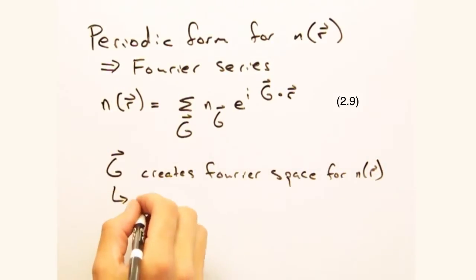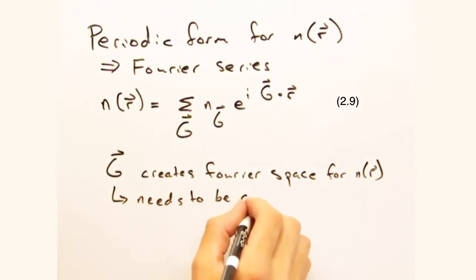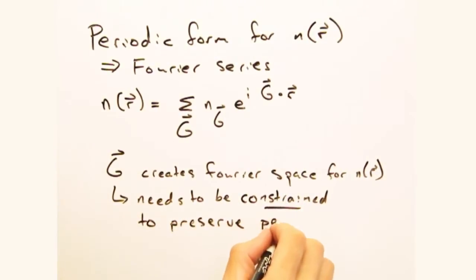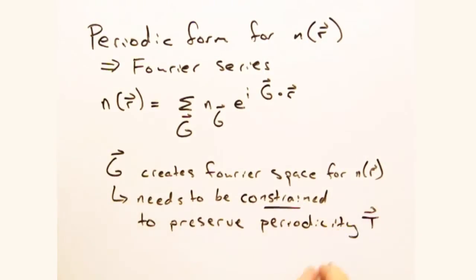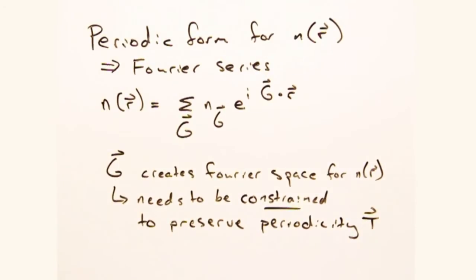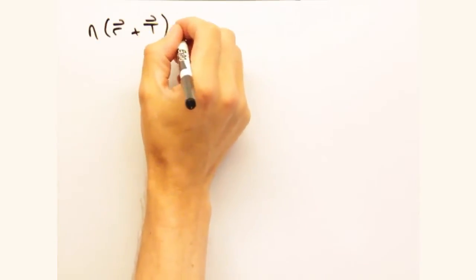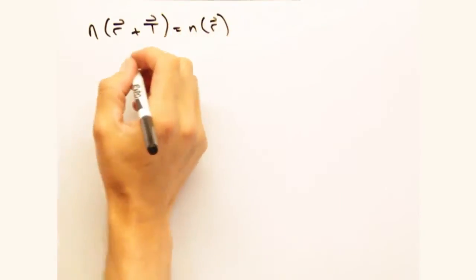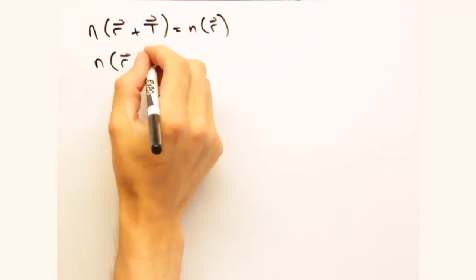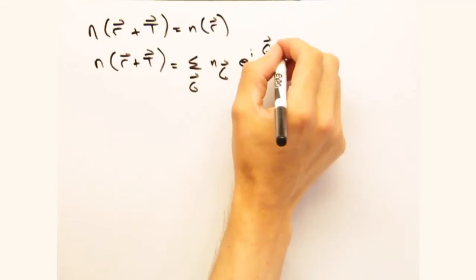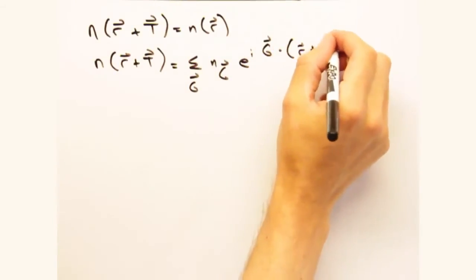But remember, we began with an infinitely periodic solid. Now that we have this sum, we need to constrain g so that our n of r expression still satisfies this translational symmetry. And for that to occur, n of r plus our translational vector t, which we introduced last week, should equal n of r. Plugging r plus t into our Fourier series and separating the exponentials, we get the following.